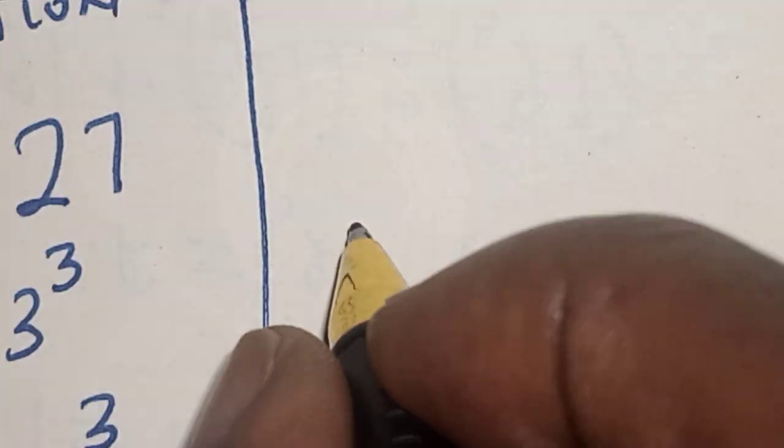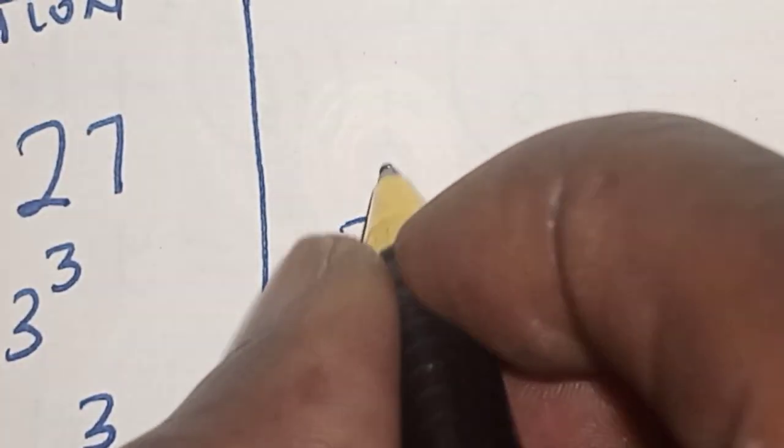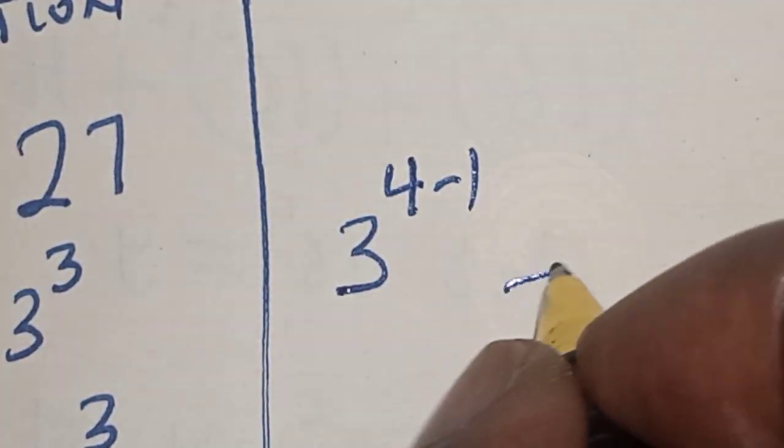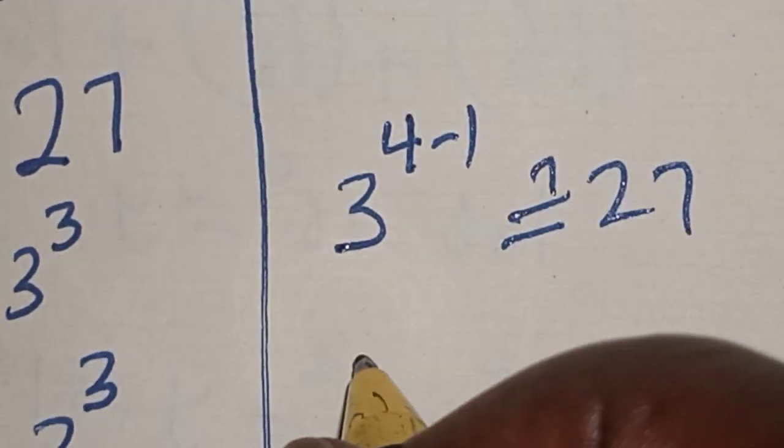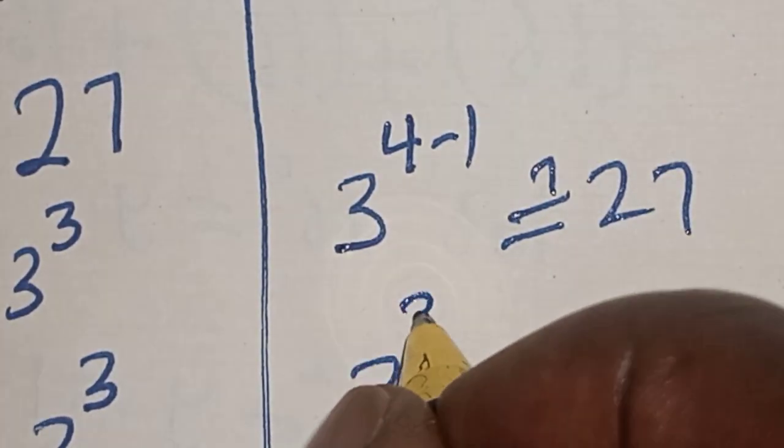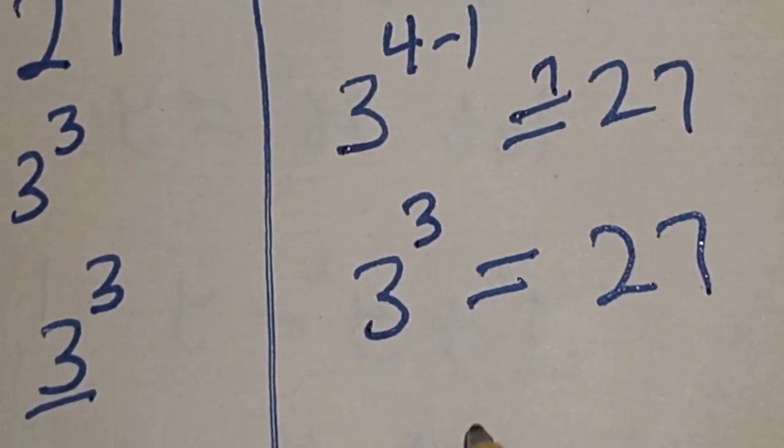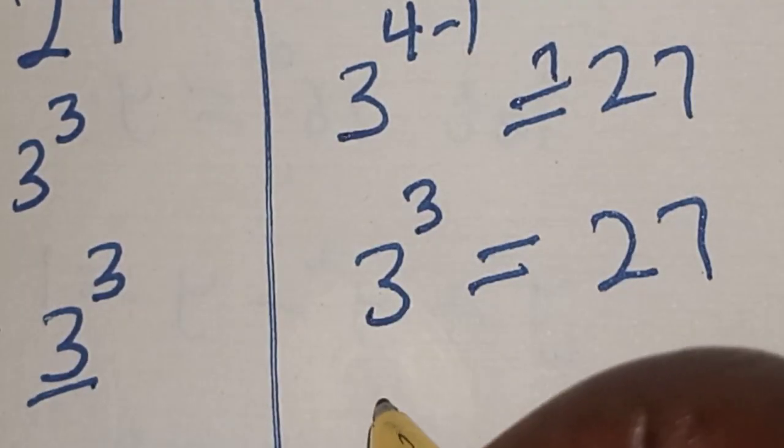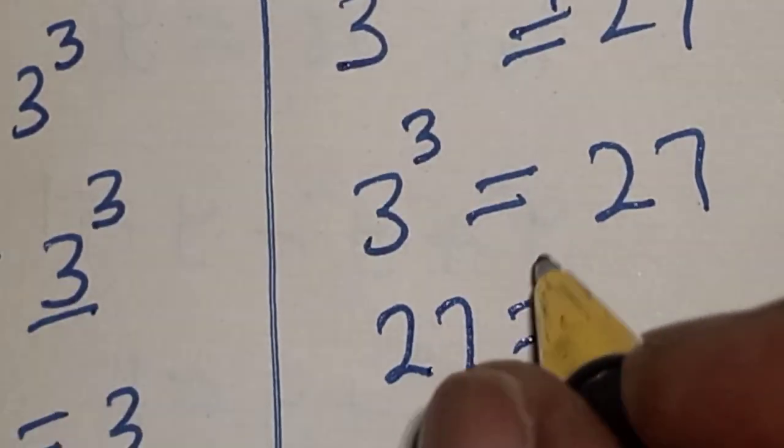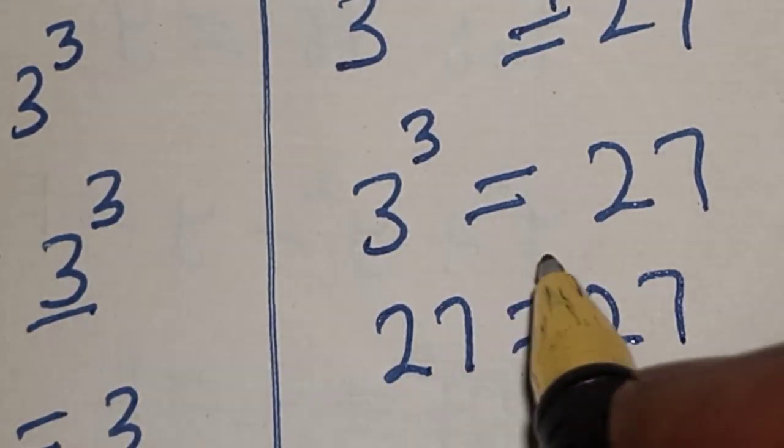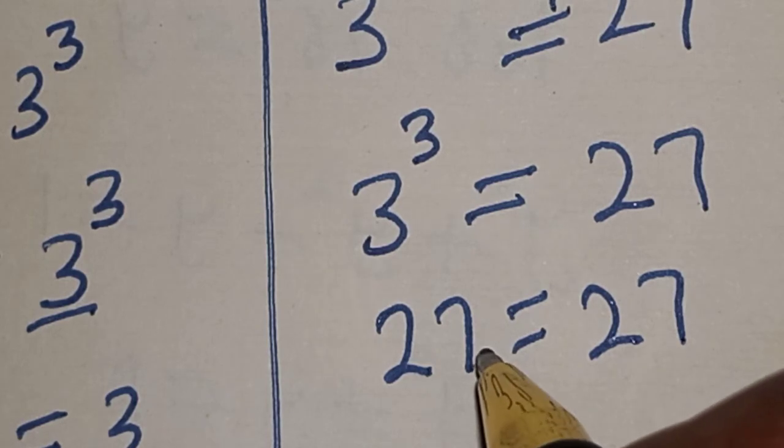This is 3 raised to power 4 minus 1, which is 3. This equals 27. In this case, the left-hand side 27 is equal to the right-hand side 27, meaning our answer is correct.